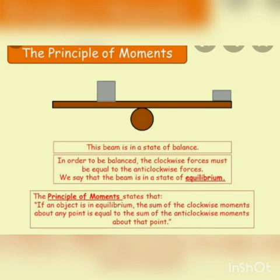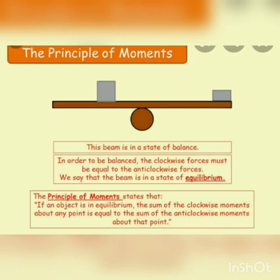Next, we will see the principle of moments. Is it possible to balance an object of different weight? Yes, of course it is possible. By applying the principle of moments, we can see how to make an object to be in equilibrium position. According to the principle of moments, in equilibrium, the total clockwise moments must be equal to the total anticlockwise moments. We can make these equal by adjusting the distance between the object and the point of rotation — that is the principle of moments.